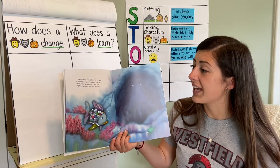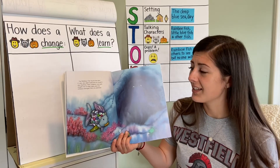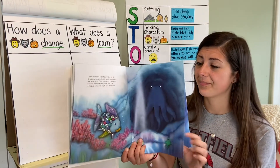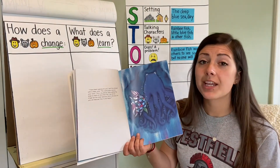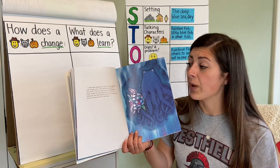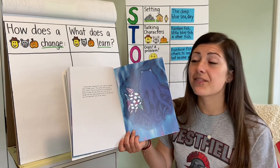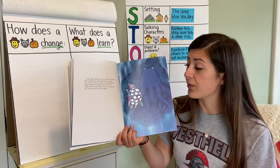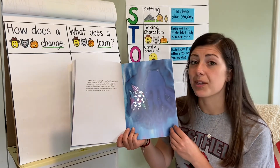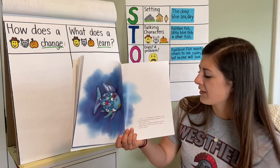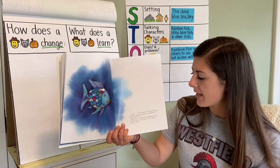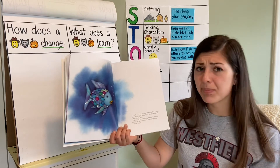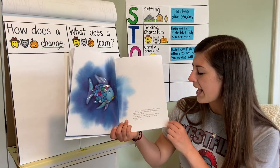The Rainbow Fish found the cave. It was very dark inside and he couldn't see anything. Then suddenly two eyes caught him in their glare and an octopus emerged from the darkness. I've been waiting for you, said the octopus. The waves have told me your story. Give a glittering scale to each of the other fish — you will no longer be the most beautiful fish in the sea, but you will discover how to be happy. Give away my scales? My beautiful shining scales? Never! How could I ever be happy without them?